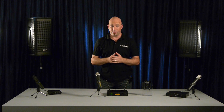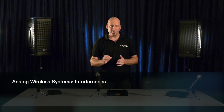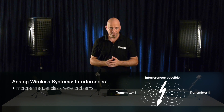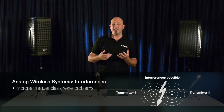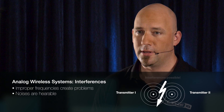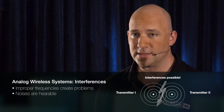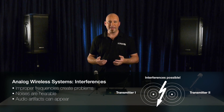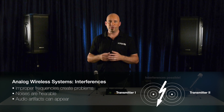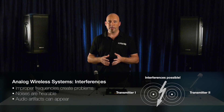Anyone familiar with traditional FM radio has experienced many types of interference artifacts. When two radio stations are close together in frequency, it is sometimes possible to hear a combination of both at the same time. In analog wireless microphones, any interference that causes audio artifacts can disrupt a performance. One way that analog wireless attempts to reduce this is the use of a pilot tone and a squelch circuit.